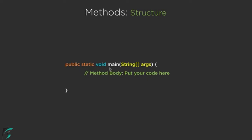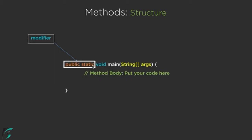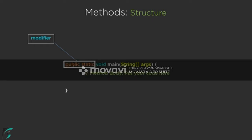What do we mean by public static void and this main function? Public static is actually known as the modifier in Java. This public static can be private static, only private, or protected. Whatever we write just before the void or the return type is known as the modifier of the method.